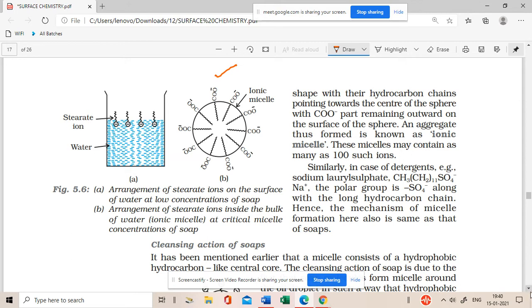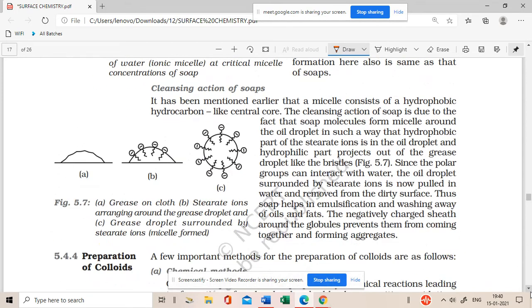Now, cleansing action of soap - what happens in the water? The fat goes into the water in micelle form. Micelle formation causes emulsification of fat. The fat is broken down into small parts. The dirt particles get removed when you agitate the cloth. So the function of the soap is not to remove the dirt particles, the function of the soap is to remove the oil particles which is trapping the dirt particles.